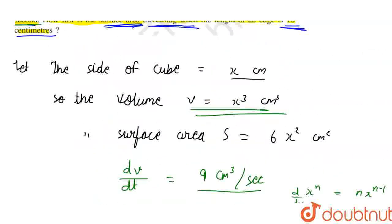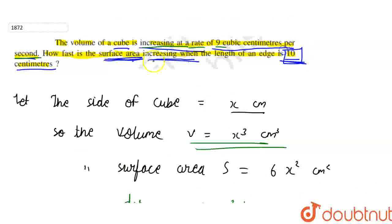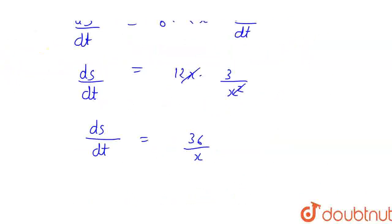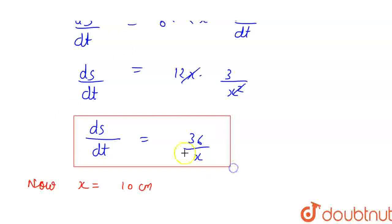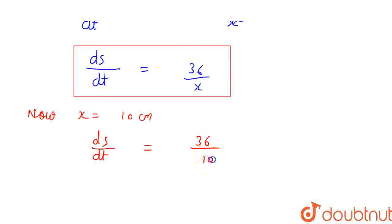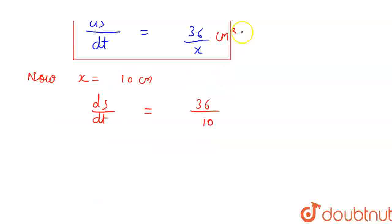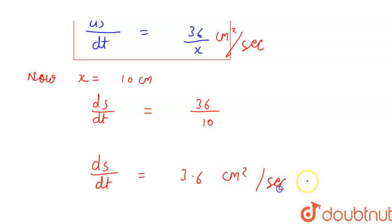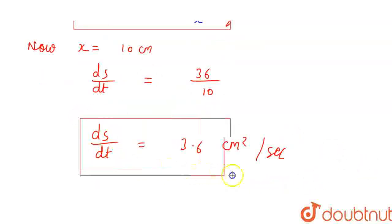Now, from the question the edge is 10 cm, so x = 10 cm. The rate of change of surface area becomes dS/dt = 36/10 = 3.6 cm² per second. So the rate of change of surface area of the cube when the edge is 10 cm is 3.6 cm² per second. This is our answer.